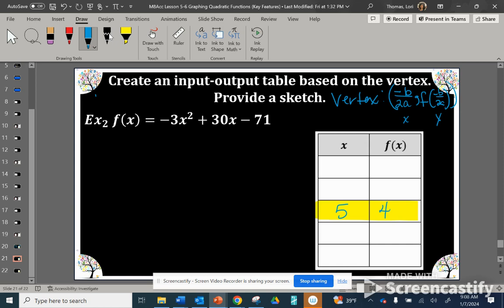I know I want to choose 2 x-values to the left, so that would be 4 and 3, and then 2 x-values to the right of 5, which would be 6 and 7. The output of 4 and 6 will be the same, and the output of 3 and 7 will be the same. Those are corresponding points, equally distant from the axis of symmetry.